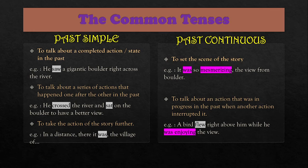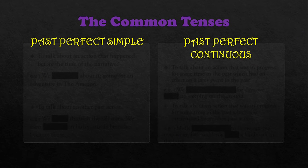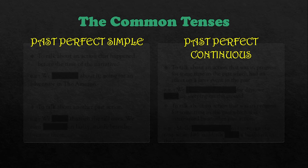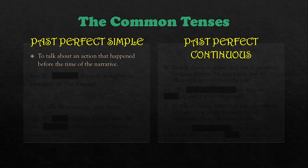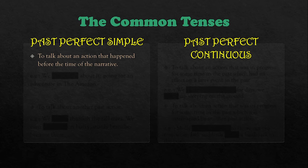Alright, so that was revision — we've already learned all this before. Next, past perfect simple and past perfect continuous — this one we've just recently learned. We use past perfect simple to talk about an action that happened before the time of the narrative — something that completely happened in the past.